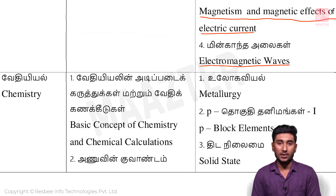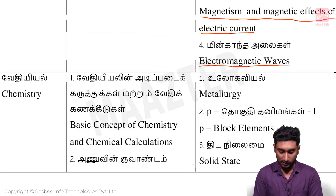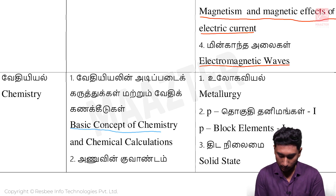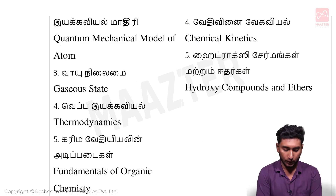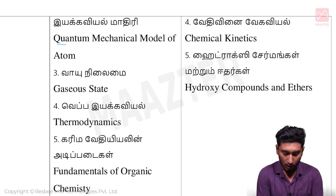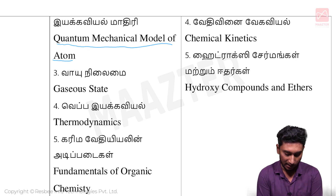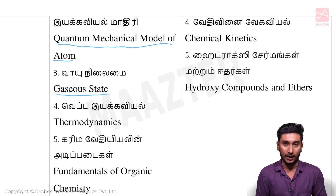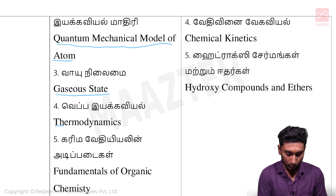Next, Chemistry. For 11th standard students: Unit 1: Basic Concepts of Chemistry and Chemical Calculations. Unit 2: Quantum Mechanical Model of Atom. Then Unit 6: Gaseous State. Then Unit 7: Thermodynamics.